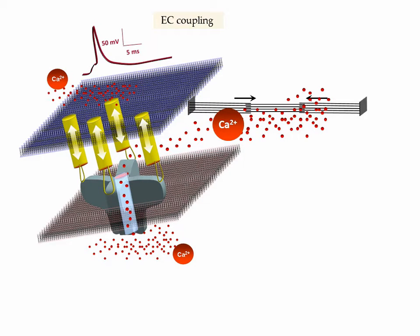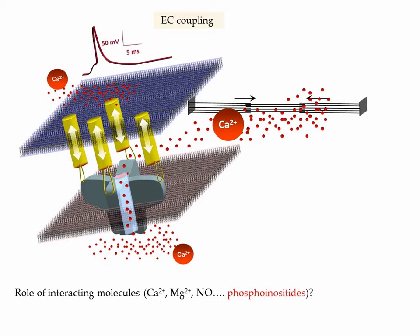Now this is a simplified picture of this process, which is obviously much more complicated. For instance, there is a number of accessory proteins present in this environment that are either known or presumed to regulate the process. Similarly, there is a number of messenger molecules that are also suspected to play a role in the regulation of EC coupling. Among these molecules, we have been interested recently in the possible role of phosphoinositides.